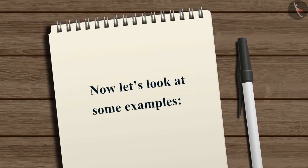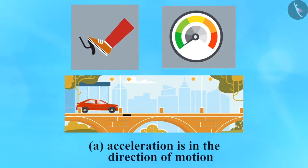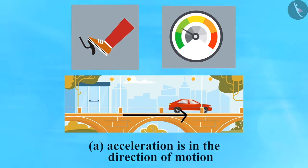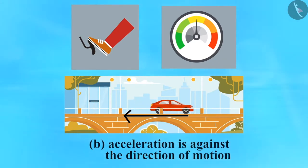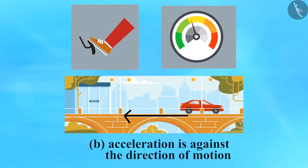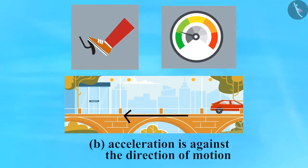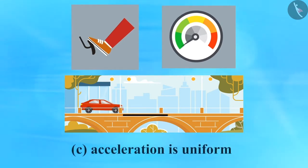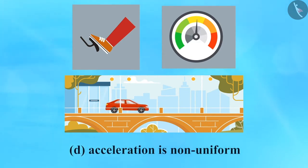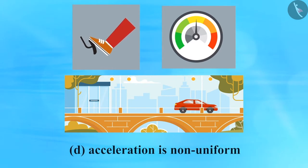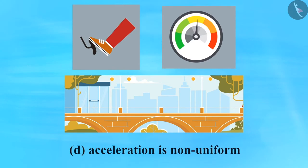Now let's look at some examples. A: acceleration is in the direction of motion — when the driver pushes the accelerator pedal, the car starts from rest and speed keeps increasing; the acceleration is positive. B: acceleration is against the direction of motion — the driver applies the brake, the car slows down; although the car's direction of motion is towards the right, acceleration is applied in the opposite direction, so the acceleration is negative. C: acceleration is uniform — when the driver pushes the accelerator pedal and keeps it at a certain position, the speed increases at a uniform rate. D: acceleration is non-uniform — the driver pushes and releases the accelerator pedal repetitively for different time intervals, giving the car jerks along with an increase in speed.